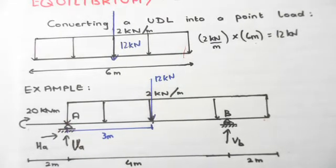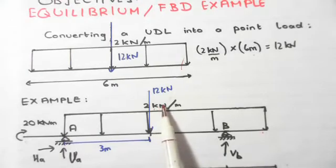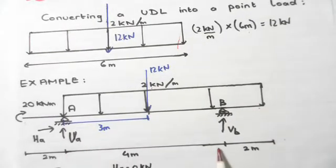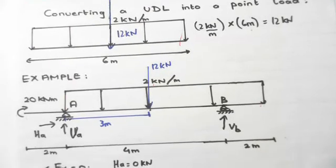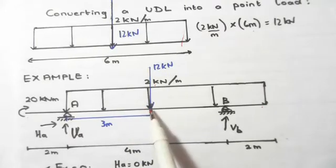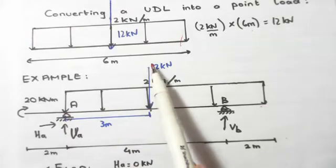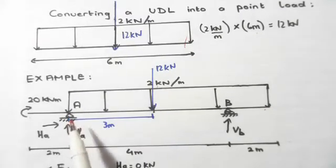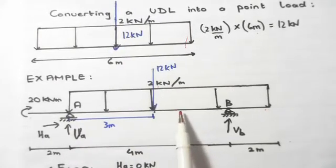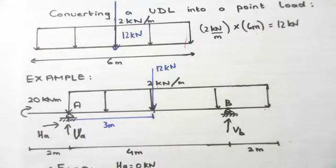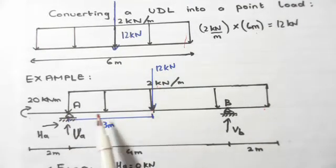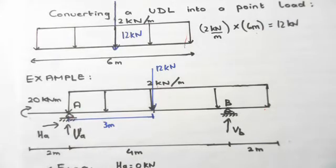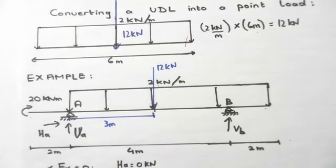The first thing we do is convert the UDL into a point load. It's the same UDL as before: two kilonewtons per meter times six meters — since the span from left to right is four meters plus another two meters, giving six meters total — which equals 12 kilonewtons. Since we've converted the UDL into a point load, the point load is in the center of the UDL, which is three meters away from the pin. Note the diagram is not to scale, but the point load always sits exactly at the midpoint of the UDL span.